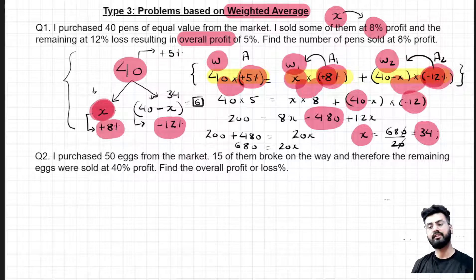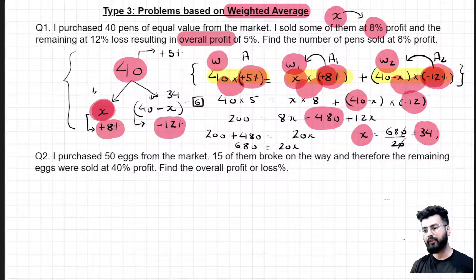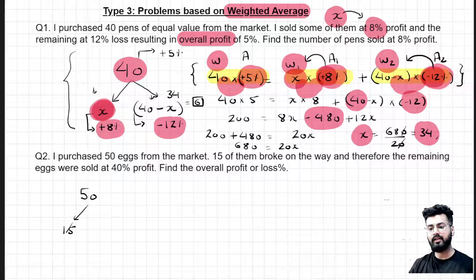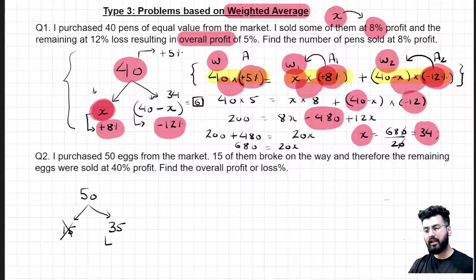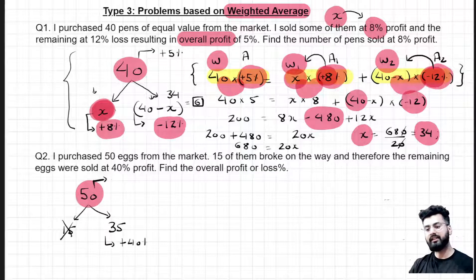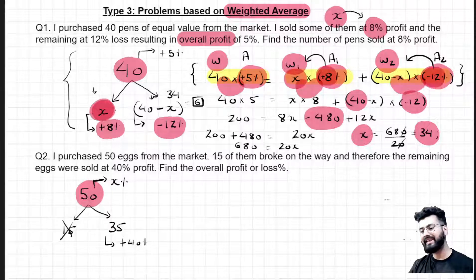Let's discuss one more question of the same type. I purchased 50 eggs from the market; 15 of them broke on the way — they are destroyed — and therefore the remaining eggs were sold at 40% profit. They asked us to calculate overall profit or loss. Remember, we calculate overall profit or loss over the total quantity. Let me assume this as x% since I am not aware whether it is going to be a profit or a loss.